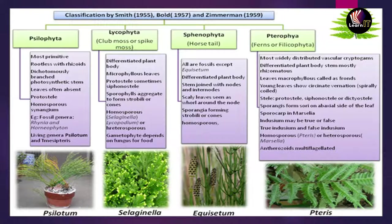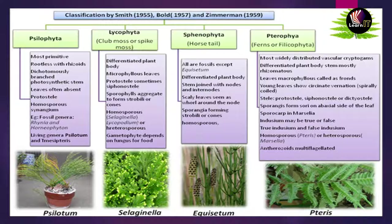The next group is Sphenopsida. These are all fossils. The plant body has also been differentiated into different parts. The stems are jointed with nodes and internodes, and the leaves are scaly and whorled around the nodes.